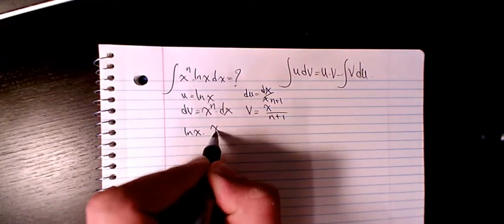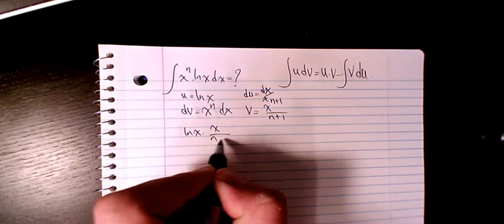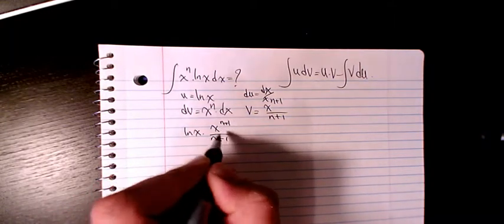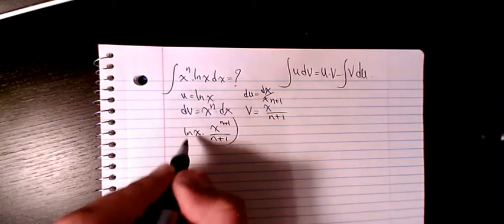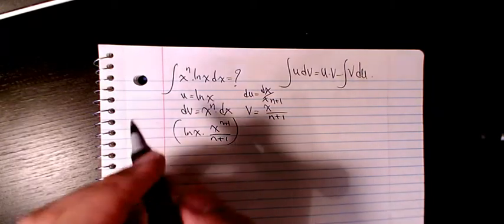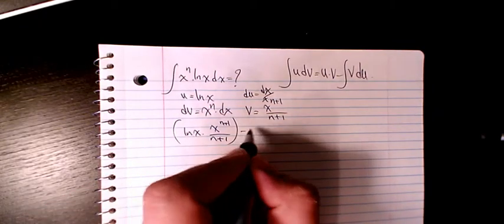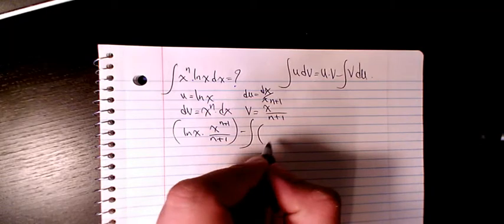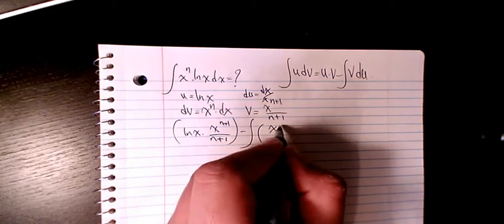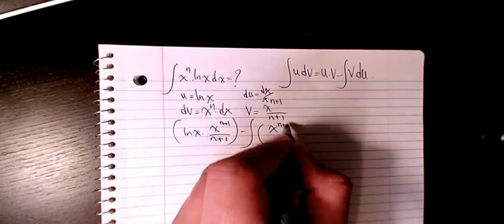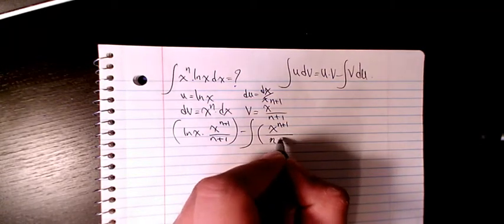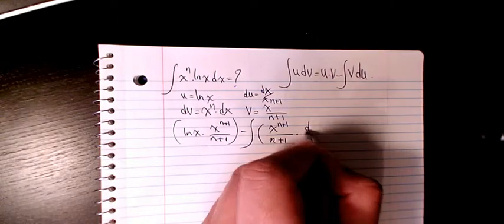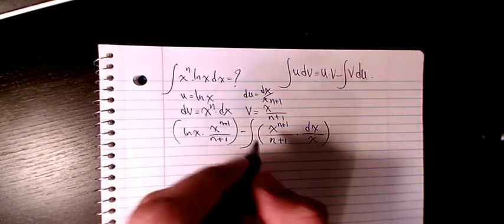So u times v is ln x times x to the power of n plus 1 divided by n plus 1, minus the integral of v du, which is x to the power of n plus 1 divided by n plus 1 times dx over x.